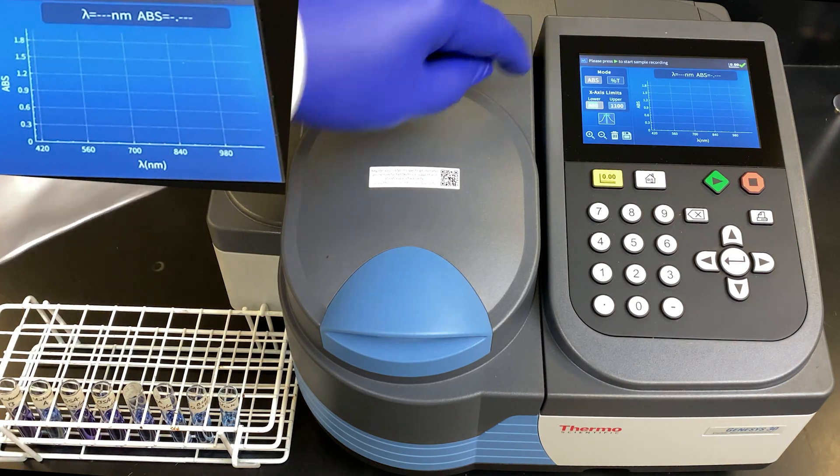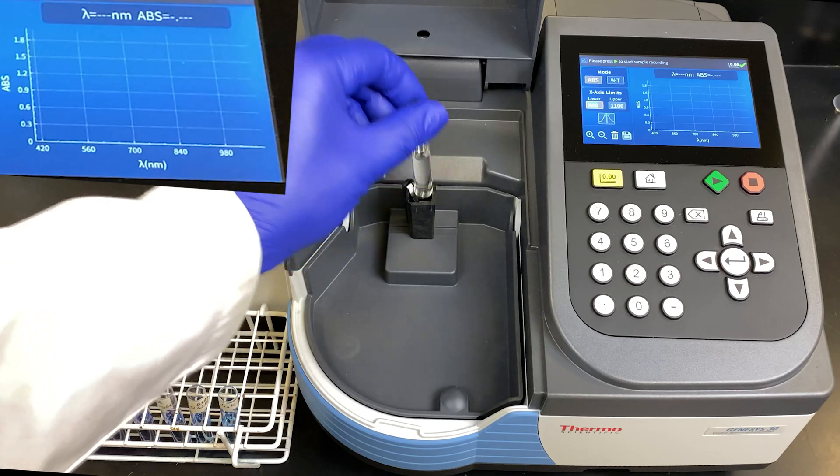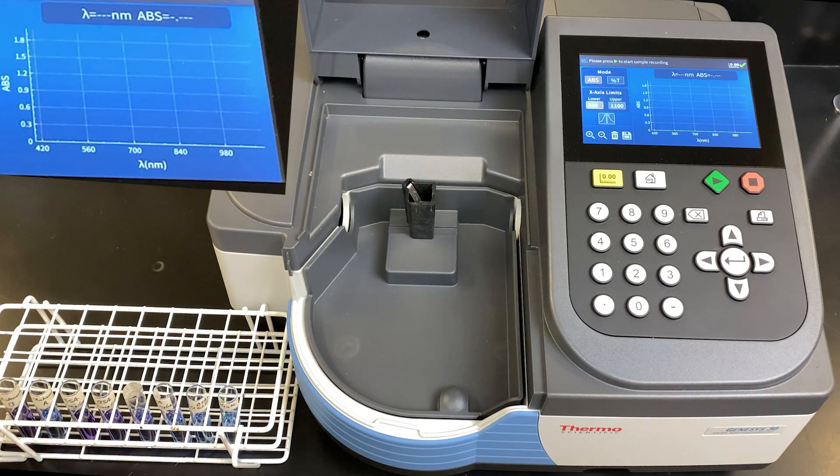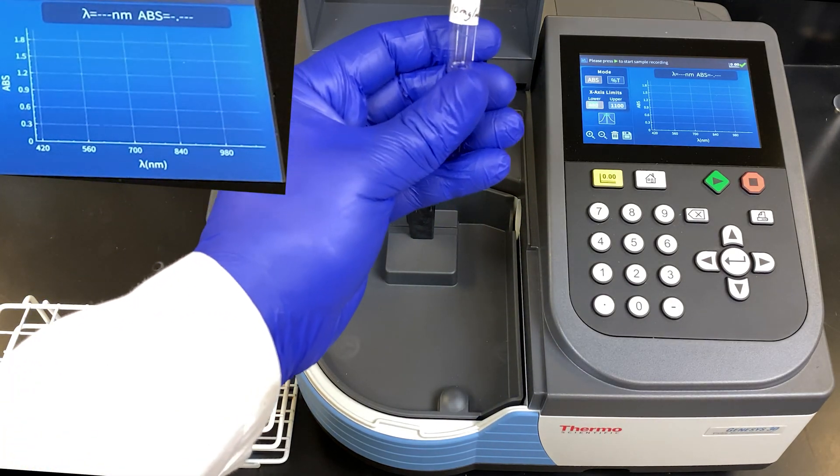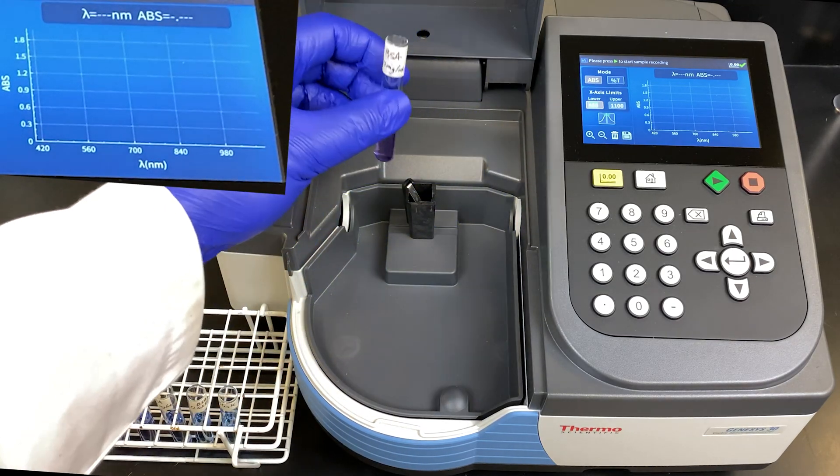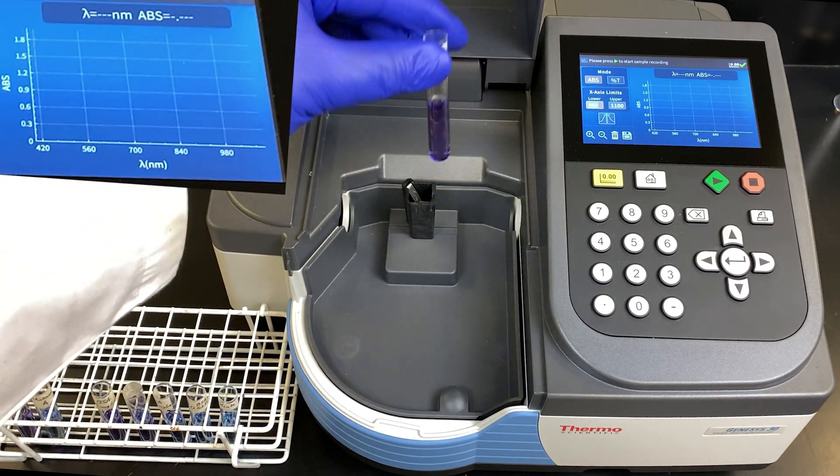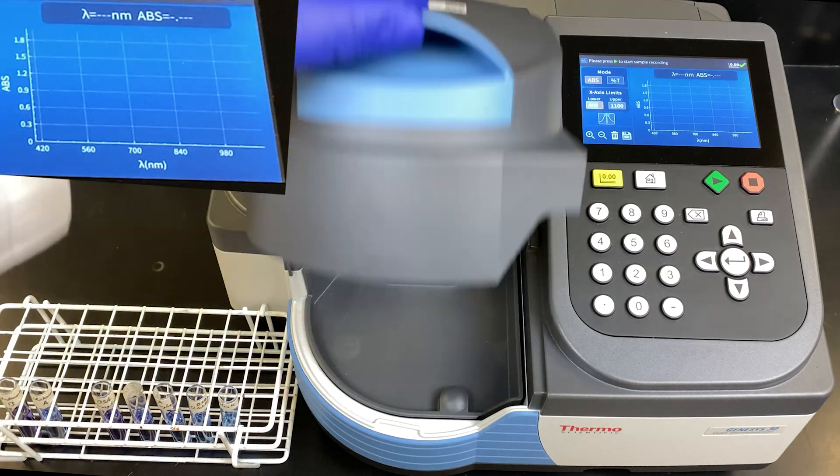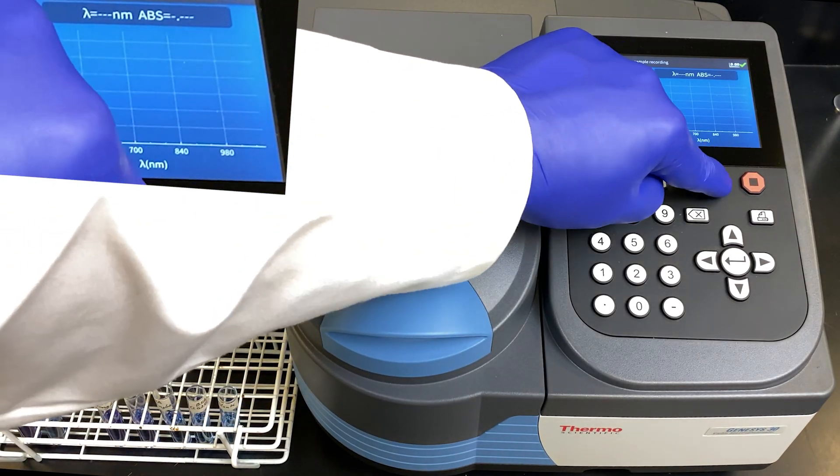Almost done. It now says present your sample. We will remove the water. We will take the highest concentration BSA, 10 milligrams per mL, place that into the cuvette holder. And press the play button right here.